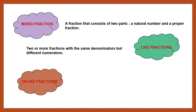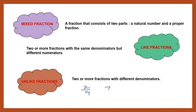Then, we have the unlike fractions. What are unlike fractions? Two or more fractions with different denominators. Here also, we need to have at least two fractions. Suppose I have 2 by 9, 7 by 8, 5 by 6. I have three fractions here and all denominators are different. Such fractions with different denominators are called unlike fractions. You need to have at least two or more fractions with different denominators to consider them as unlike fractions.